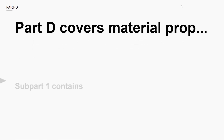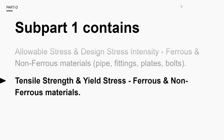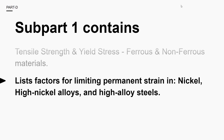Part D has two subparts. Subpart 1 contains allowable stress and design stress intensity tables for ferrous and non-ferrous materials for pipe, fittings, plates, bolts, and so forth. In addition, it provides tensile strength and yield strength values for ferrous and non-ferrous materials. It also lists down factors for limiting permanent strain in nickel, high nickel alloys, and high alloy steels.